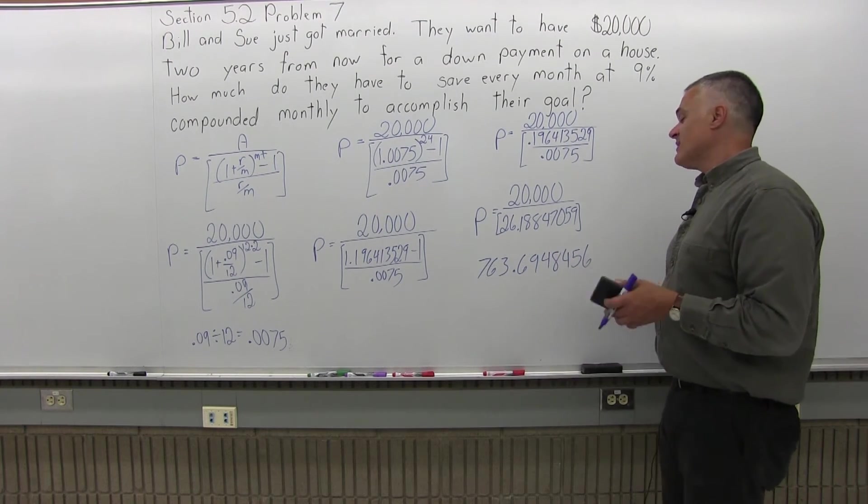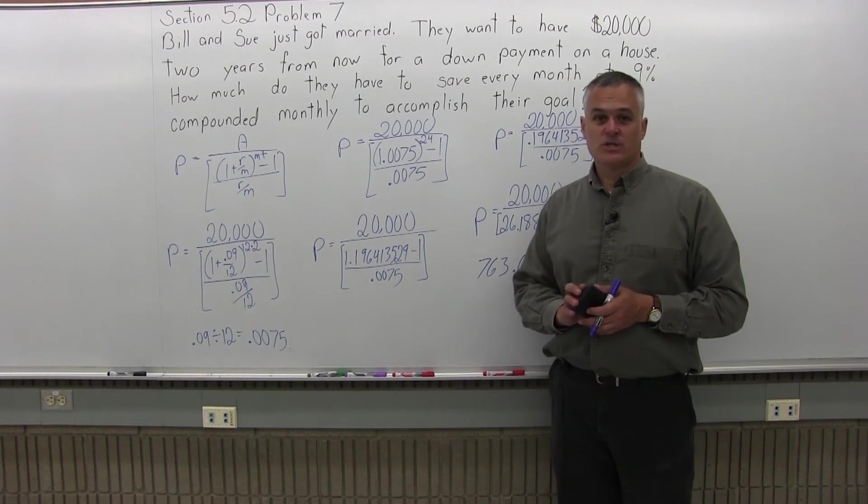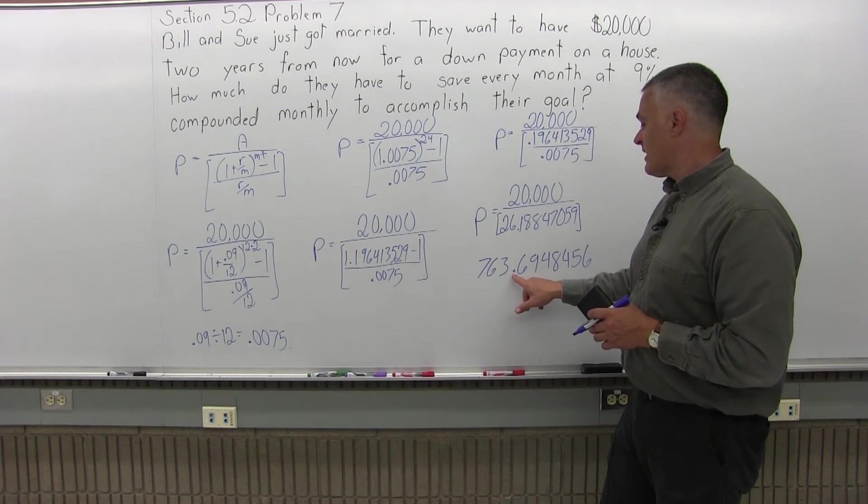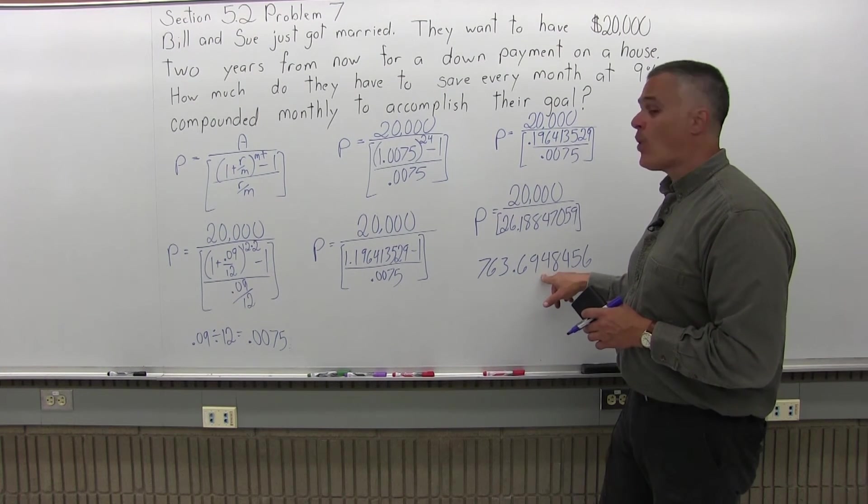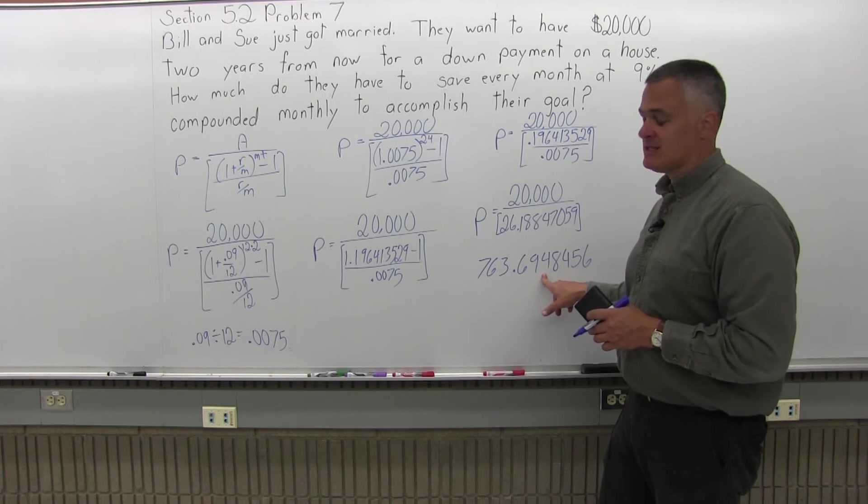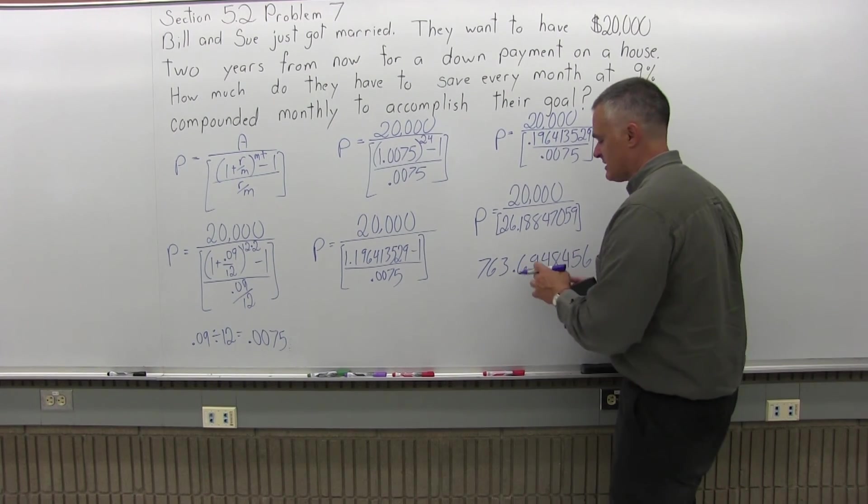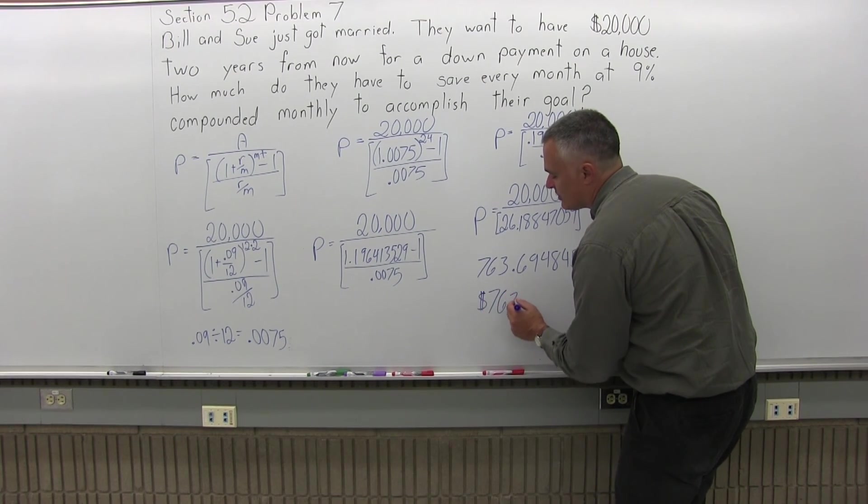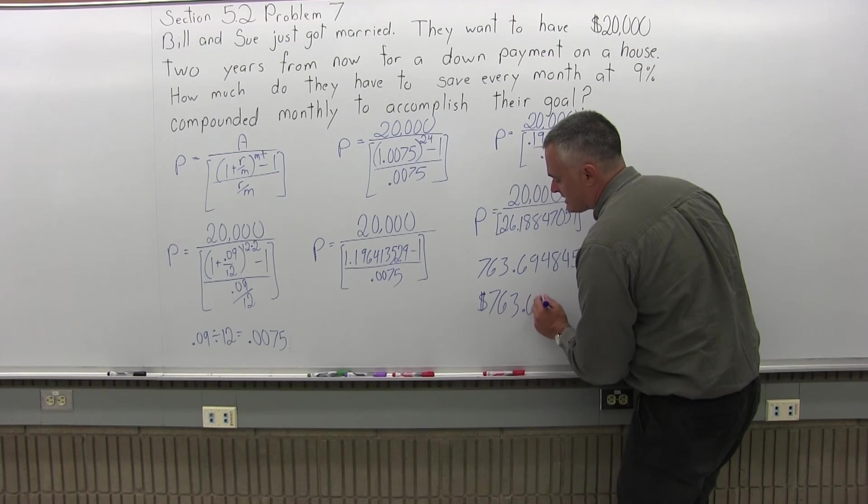So I have like seven digits after my decimal point, which is way too much. I just want two places after the decimal point for how many cents. So after the decimal, I have .694 something, something, something. The four isn't big enough to make it 70 cents. It's going to get chopped off at 69 cents. So the final answer is $763.69.